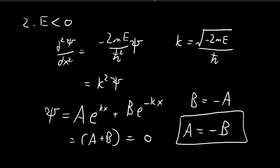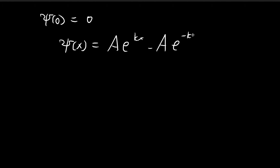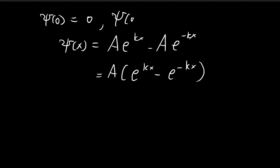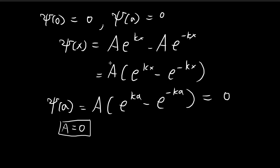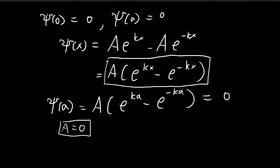Using B equals negative A, we can simplify psi of x by factoring out A, giving A times the quantity e to the power of kx minus e to the power of negative kx. Now we need to satisfy the second condition, psi of a equals zero. Substituting gives A times the quantity e to the power of ka minus e to the power of negative ka equals zero.